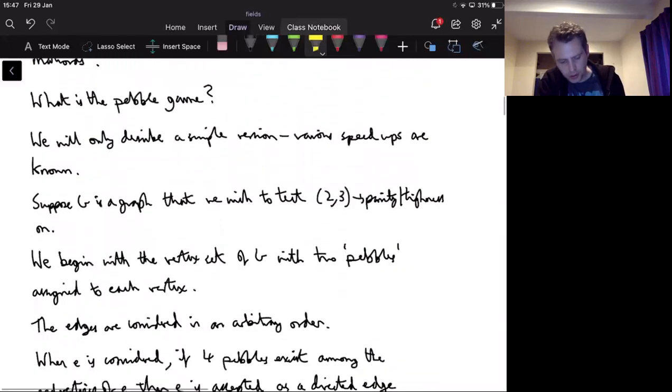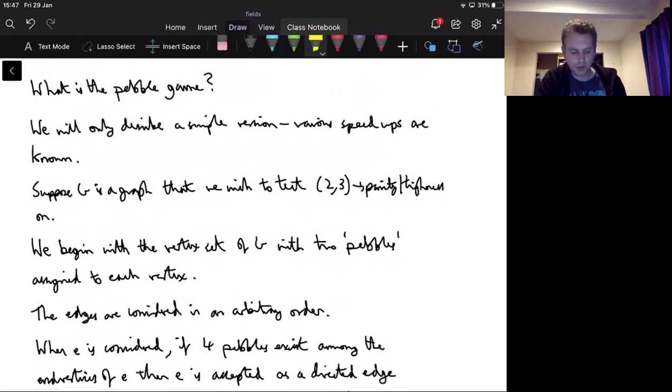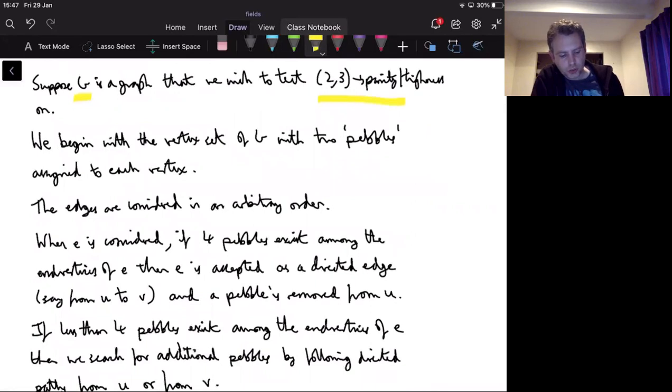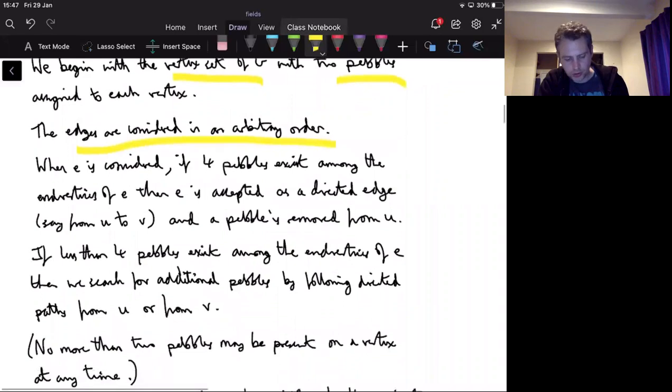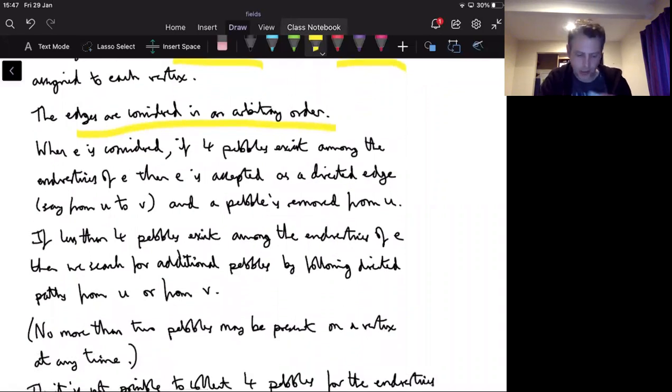So I'm going to be not hugely rigorous because I am not an algorithms person, but I just want to give you the flavor of this algorithm. But I was hoping to spend quite a bit of time so it may not get through at all. So we want to test, we can take a graph and we want to test two-free sparsity or two-free tightness. So what do we do? We start with the vertex set of the graph and we put two pebbles on each vertex, so two counters on each of the vertices. We're going to test the edges in arbitrary order.